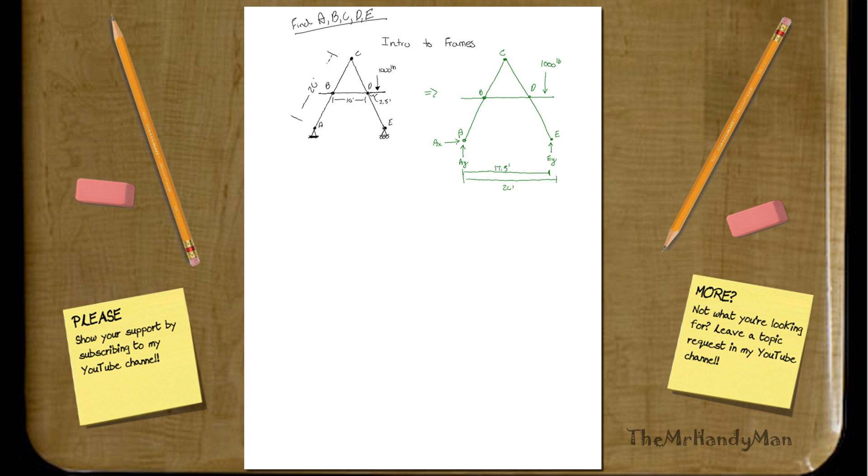Okay, so now we can kind of kick our way around here, and let's just start off with a moment, and that way we can get things out of the way. This must equal zero, that equals negative thousand times 17.5, plus E_Y times 20, which you can solve for E_Y is equaling 875 pounds, and that is the solution.